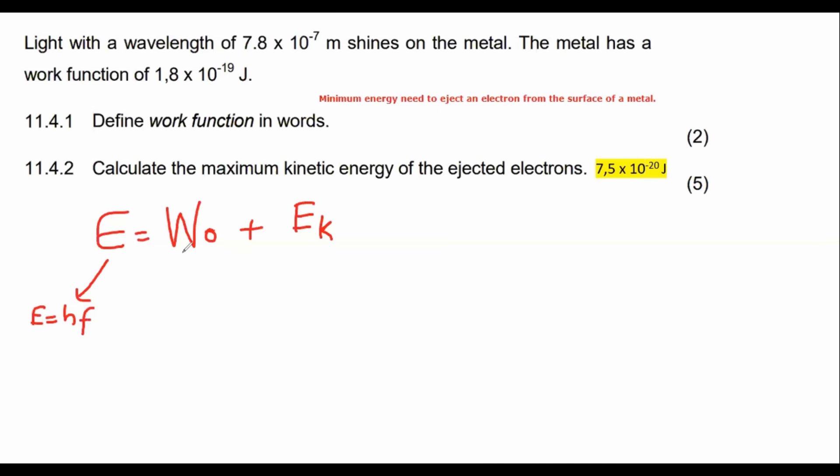Sometimes this part over here can be rewritten as E equals HF, sometimes you can rewrite it as H times F zero, and then sometimes we can expand this into half MV squared. Why do I say sometimes? It depends on the way they ask the question and you might have to change it a little bit.